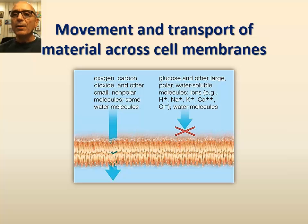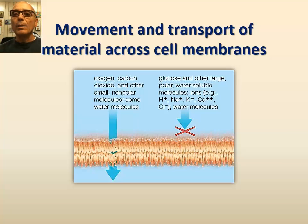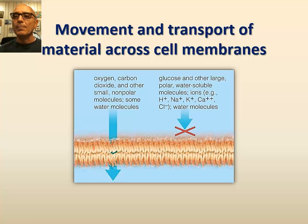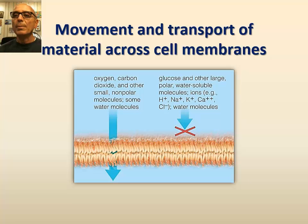One of the main functions of cell membranes is to act as a traffic controller of molecules and charged particles in and out of the cell. As we have seen earlier, cell membranes possess selective or differential permeability to molecules and ions.